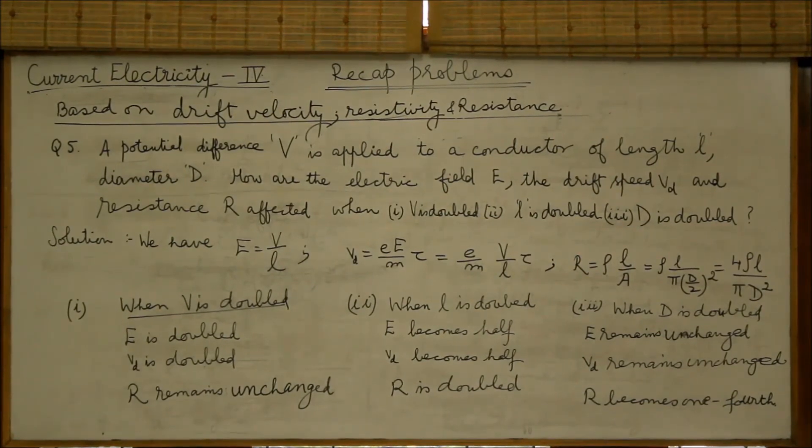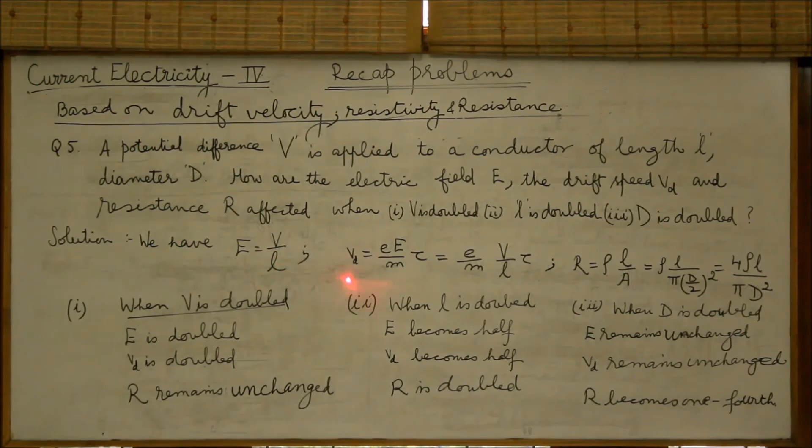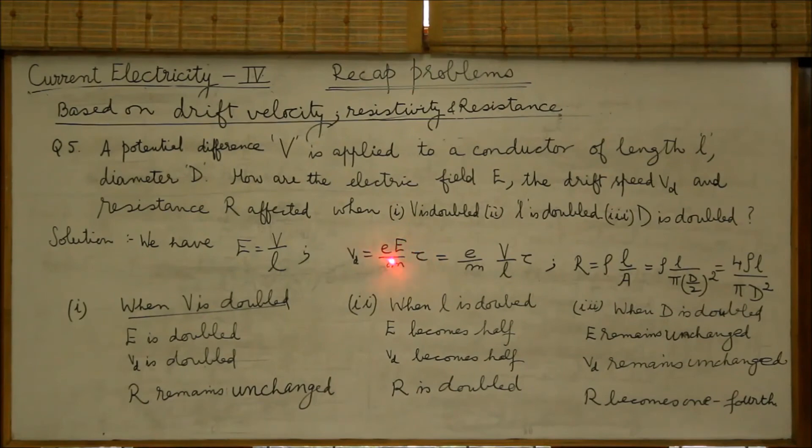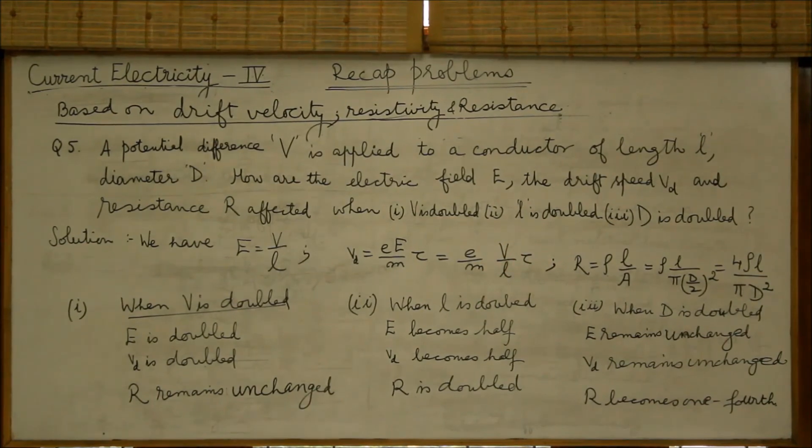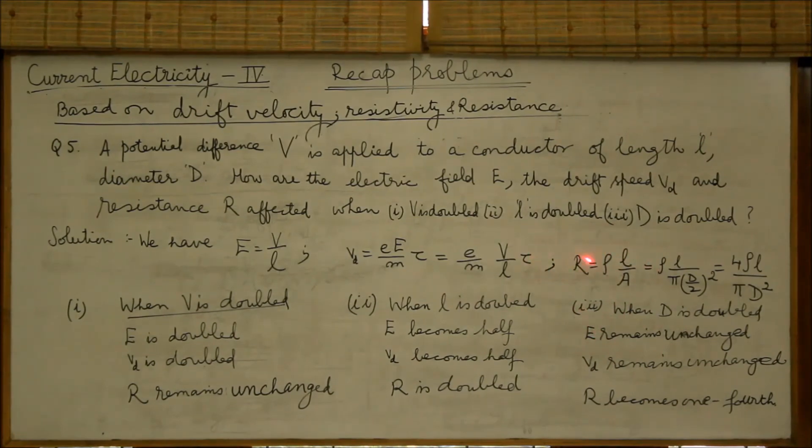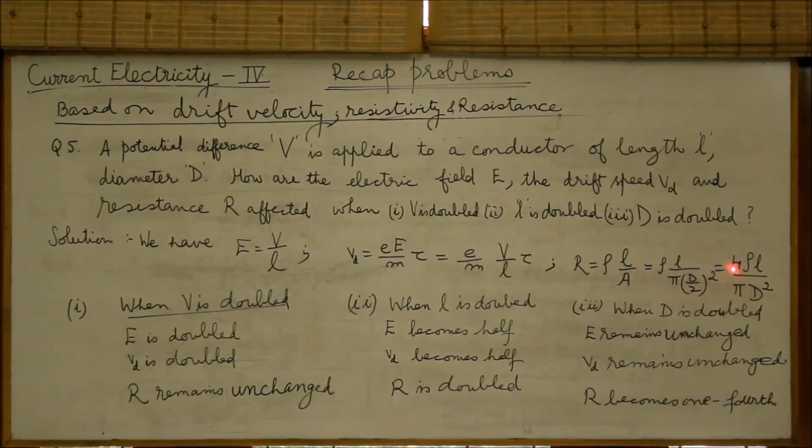In order to discuss the effect, we need expressions for the electric field which is V by L. The drift speed which is e E by M tau. E here, the electric field, is replaced by V by L. And resistance R is rho L by A. Area we can write in terms of diameter, pi D by 2 whole square, or the resistance will be 4 rho L over pi D square.